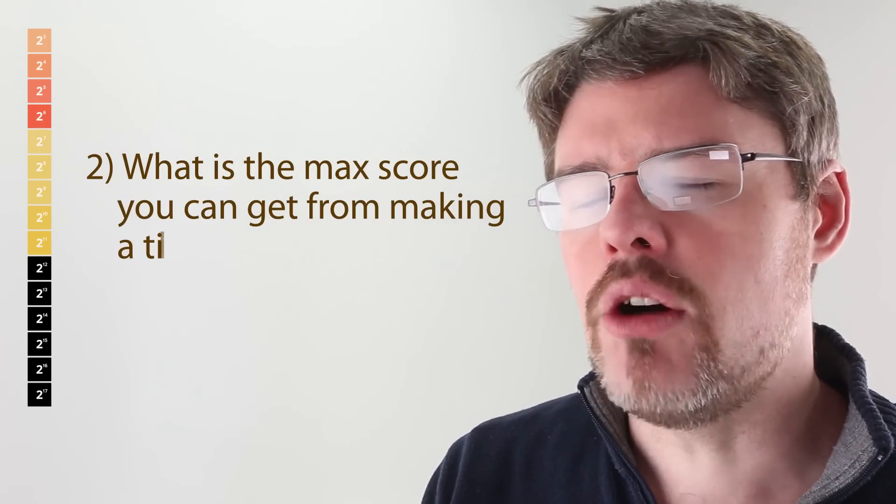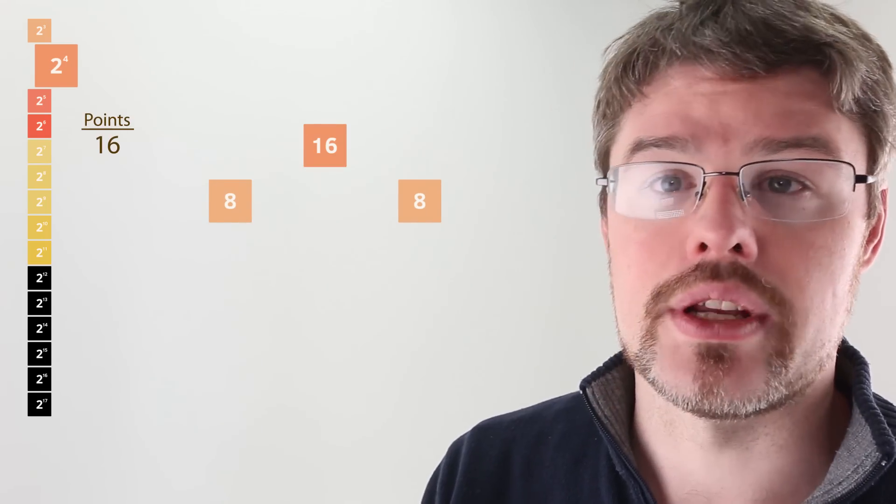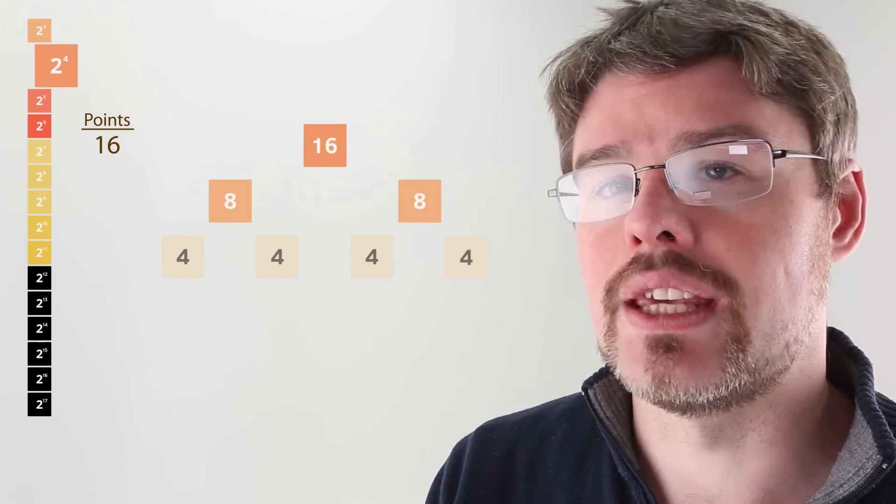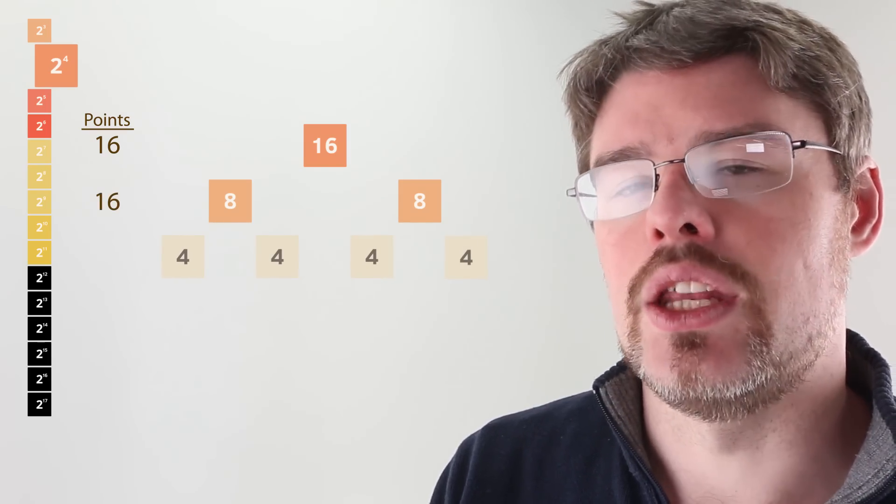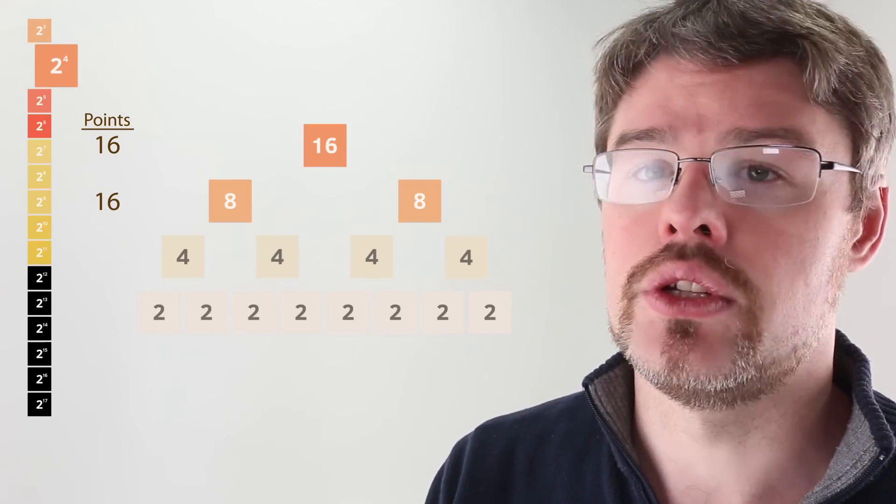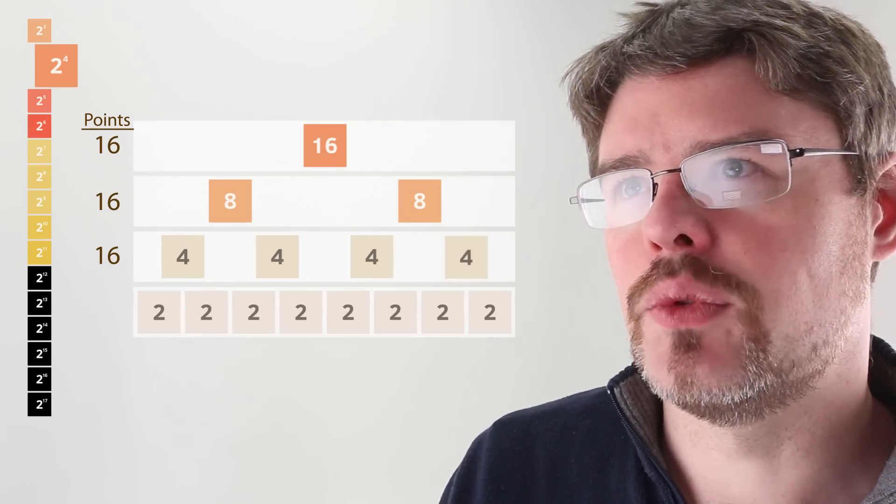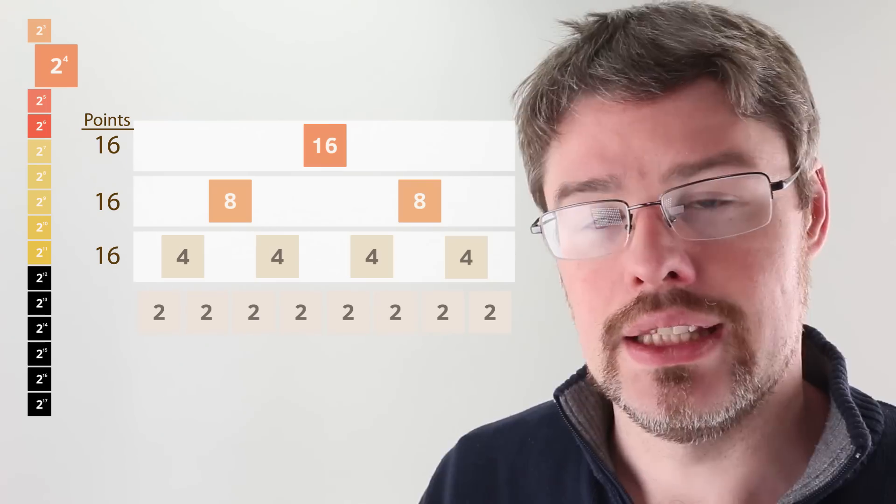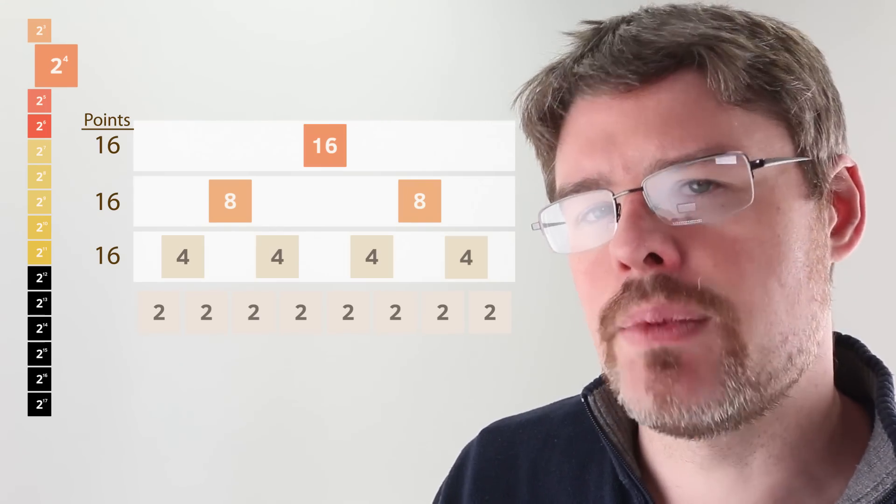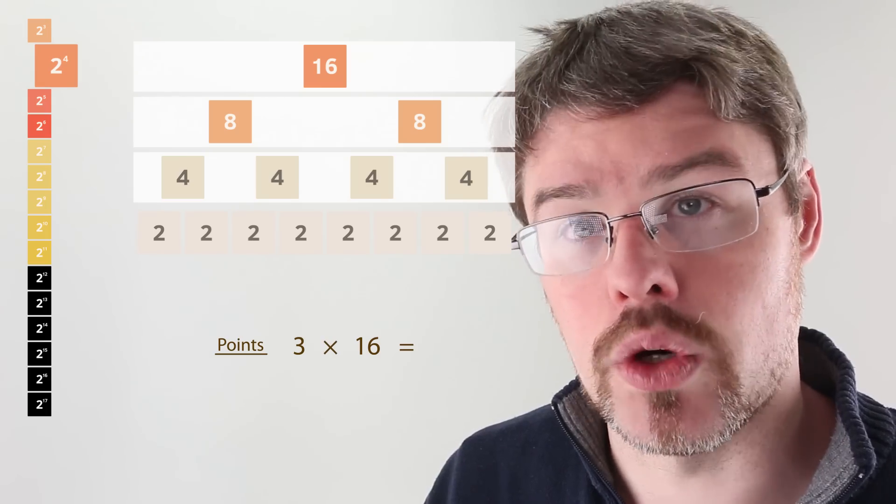Now, the next question is how much can those tiles be worth? Well, let's take a 16 tile. To get a 16 tile, you had to combine 2 eight tiles, giving you a score of 16. In order to get 2 eight tiles, you had to combine 4 four tiles, giving you another 16 points. In order to get 4 four tiles, you had to combine 8 two tiles, giving you, you guessed it, another 16 points. And the number of layers we have is 4, only we have to subtract 1 for that 2 layer, leaving us with 3. So, the maximum amount of points we could have gotten to create a 16 tile is 3 times 16, or 48.